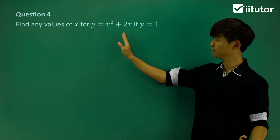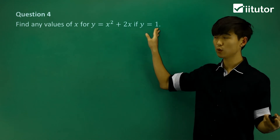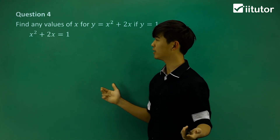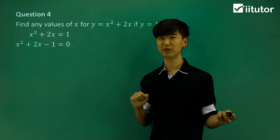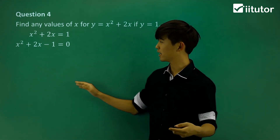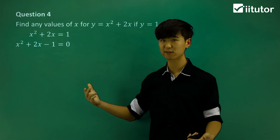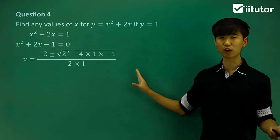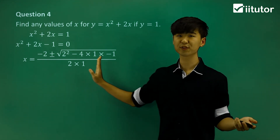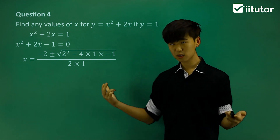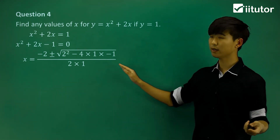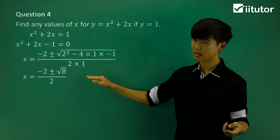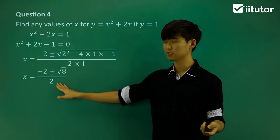Looking at the next quadratic: find the values of x when y = 1. Put y = 1, so we have x² + 2x = 1. Again, we want to make it equal to 0, so move it to the other side. We want to factorize this, but if you try, we're not going to be able to factorize it. So what I want to do is put it into the quadratic formula. It looks very long and nasty, but this is the only way. Let's simplify the inside — under the root we have root 8, and at the bottom 2 × 1 = 2.